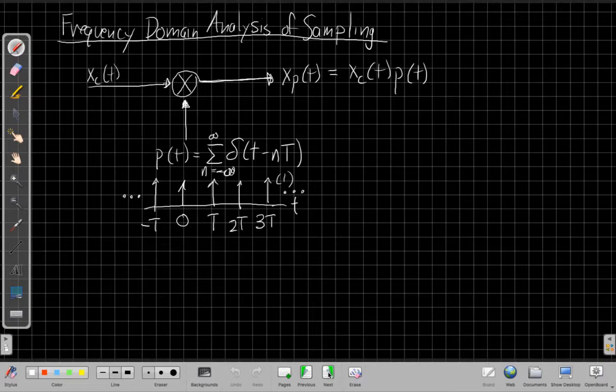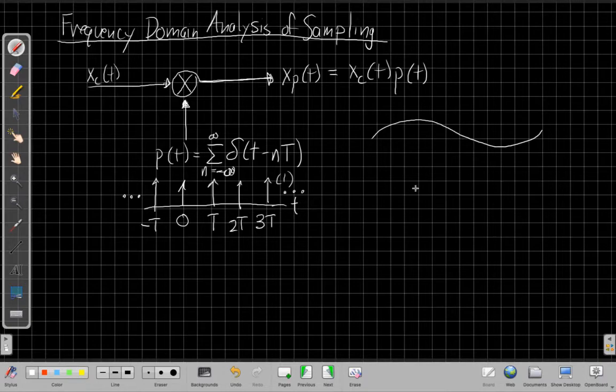So we're going to start by modeling the first step of this process. We say, well, what can we do that just grabs the value at one instant? We can use continuous time impulses, right? We can say, what if I took that continuous time signal and multiplied it point by point in time by this impulse train, right? If I started again with a smooth signal like this, by the time I was done,